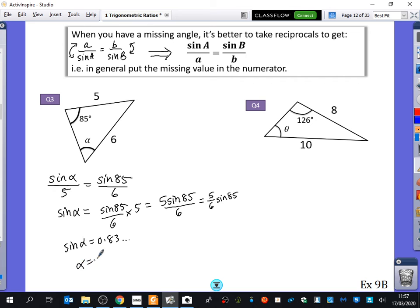So, you get that sine alpha is 0.83 and so on. So, alpha is the inverse sine of that. And so, alpha is 56.1 degrees.